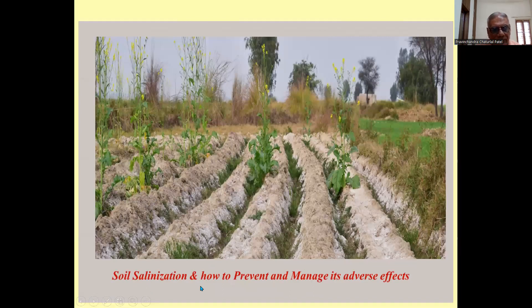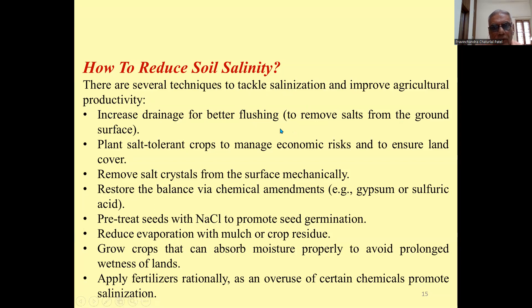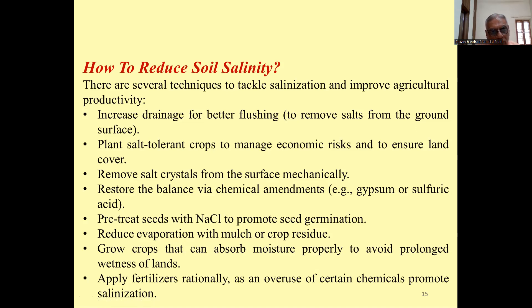To prevent and manage adverse effects of soil salinization, you can grow salt-resistant crops like mustard. Techniques to reduce soil salinity include increasing drainage for better flushing to remove salt from the ground surface. Plant salt-tolerant crops to manage economic risk and ensure land cover — in the Bhal area, farmers grow wheat, sorghum, sunflower, gram, etc.